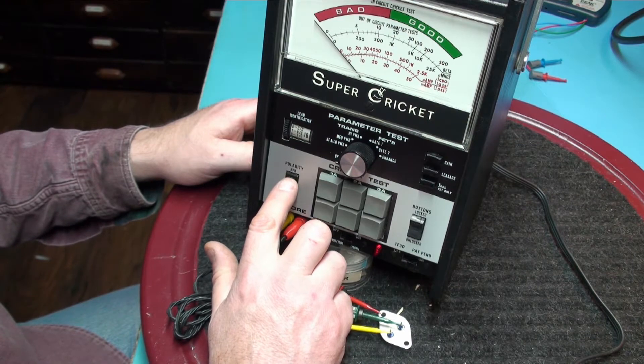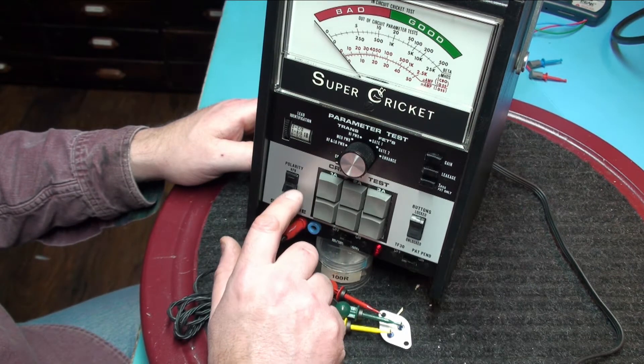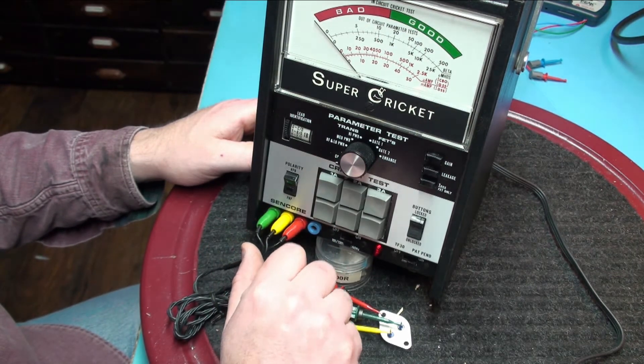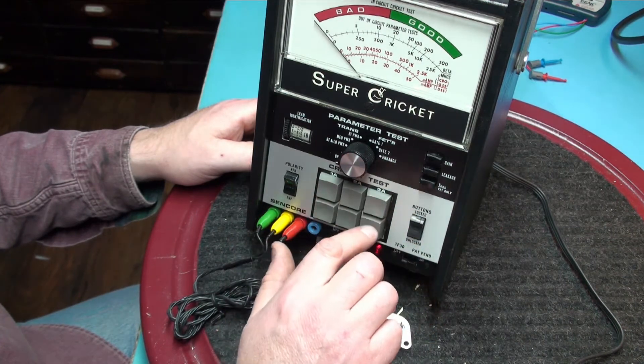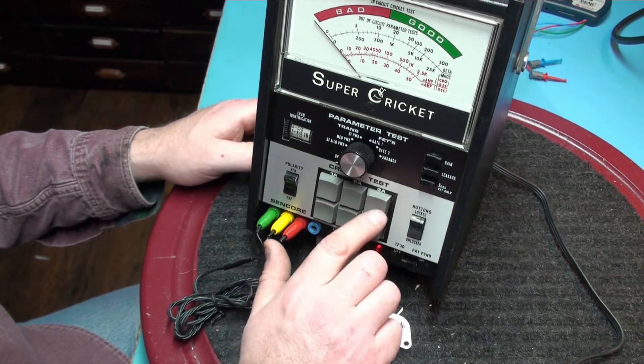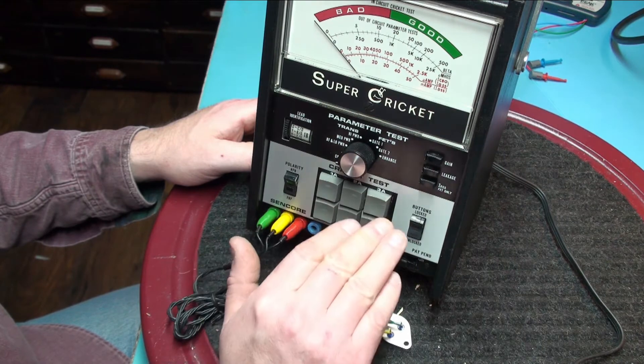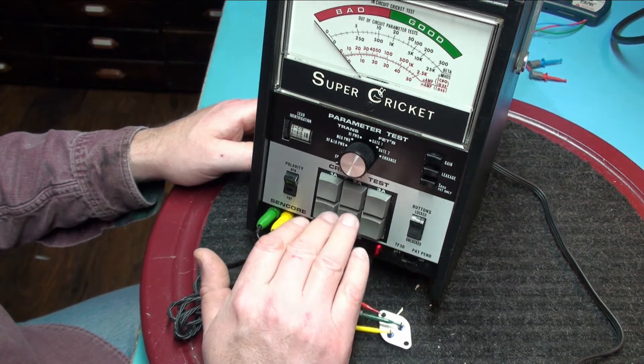So that tells me that we now need to test PNP and we are going to perform the same series of button pushes until we hear a chirp. If we don't hear a chirp at all that basically says that the transistor is bad.